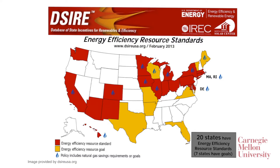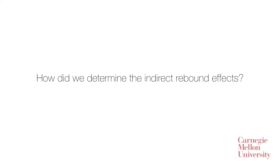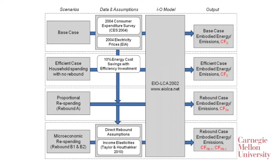So are the states measuring their progress towards those goals accurately? In this work, we seek to answer that same question. We couple a neoclassical economics model of consumer behavior with an input-output model of the economy that provides the life-cycle emissions and energy consumption for all the goods and services in the economy. Our analysis provides a first-order estimate of indirect rebound effects, and we also show how those differ by state as a function of carbon emissions factors, consumption patterns, and so forth.